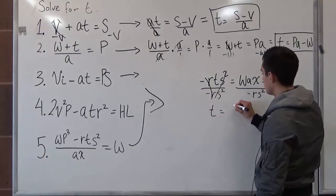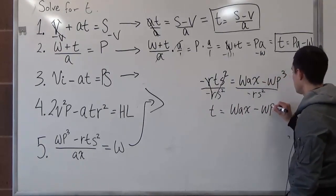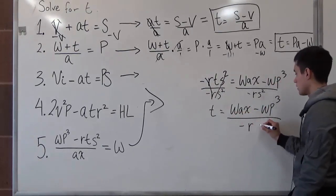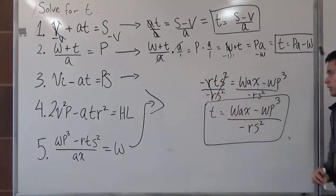And t is then just equal to wax minus wp to the third all over negative r times s squared. And that is how we get t.